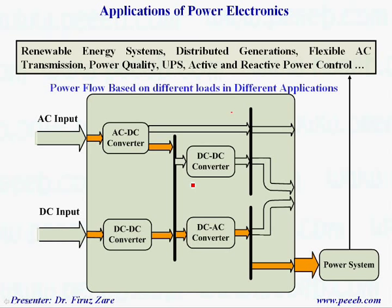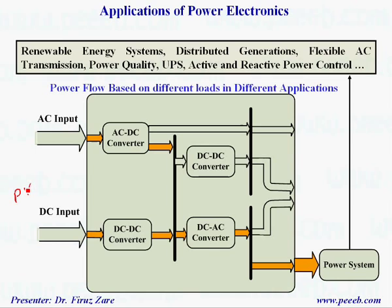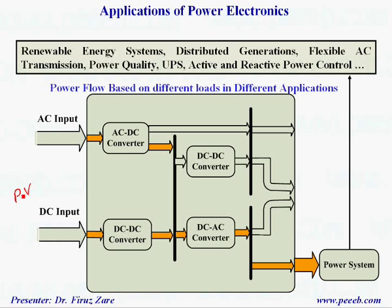We can provide AC voltage suitable for these applications. If the input is AC, through this AC-DC converter we get DC voltage, and through this DC-AC converter we can change the output frequency and magnitude for different applications. If the input is DC — for example, from photovoltaic in distributed generation, or for uninterruptable power supply — we can change the DC voltage level through a boost converter, and then change the frequency and voltage through this converter for power system applications with variable frequency and variable voltage.